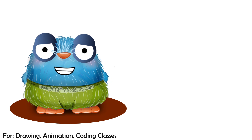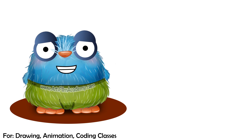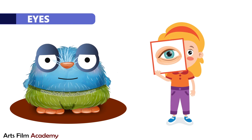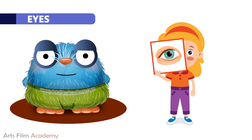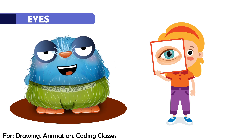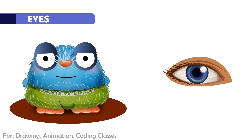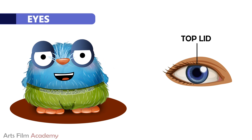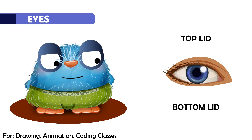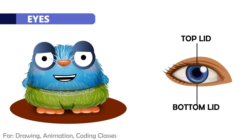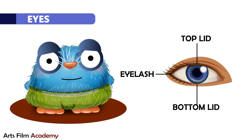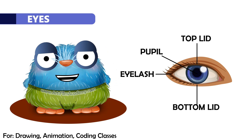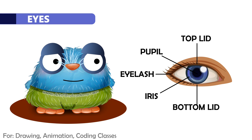Now let's try again. Eyes help us to see our surroundings. And its parts are top lid, bottom lid, eyelashes, pupil and iris.